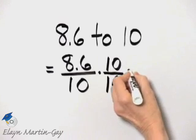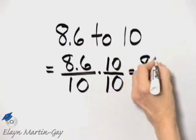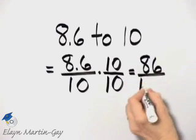So in the numerator, 8.6 times 10 is 86. In the denominator, 10 times 10 is 100.